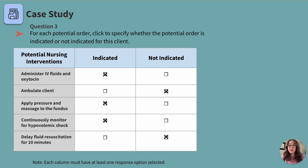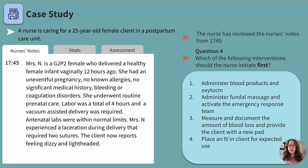Let's move on to question four: which of the following interventions should the nurse initiate first? Option one: administer blood products and oxytocin. Option two: administer fundal massage and activate the emergency response team. Option three: measure and document the amount of blood loss and provide the client with a new pad. Option four: place an IV in the client for expected use. Take a moment to pause, make your selection, then press play when you're ready to discuss.